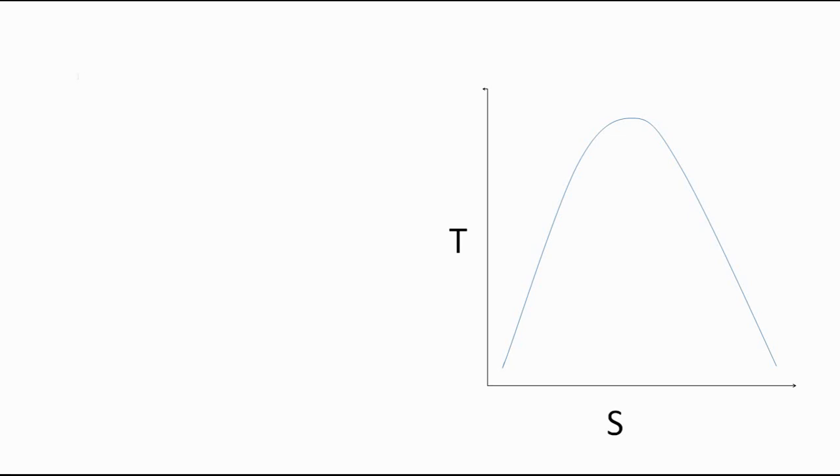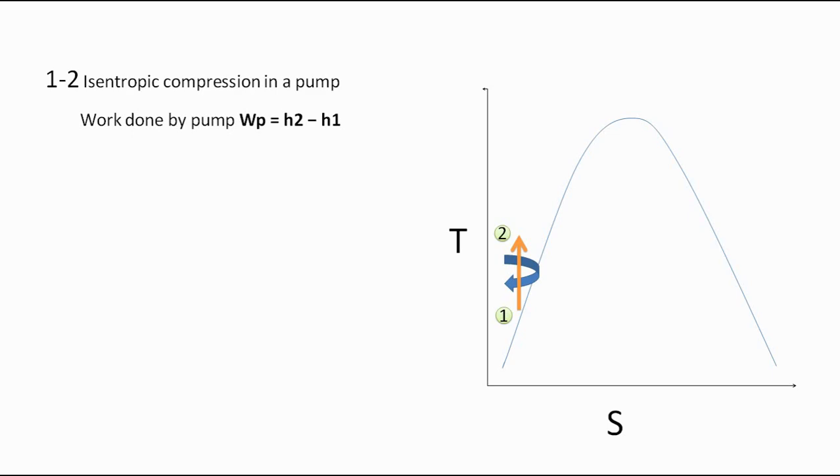We will go one by one component. First is the pump. So in pump, isentropic compression process takes place. And what is isentropic process? It is the process in which the entropy of system remains constant. So as this compression process is isentropic, which is constant entropy, you can see a vertical line on TS diagram. For this compression process, we are giving work as input to the pump. So the total work input given can be calculated using the formula Wp = h2 - h1, whereas h1 and h2 are the enthalpy of water before and after the pump.